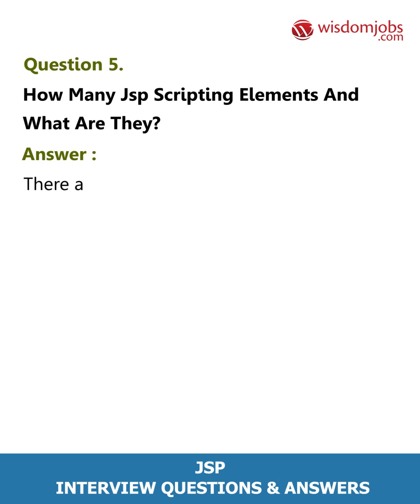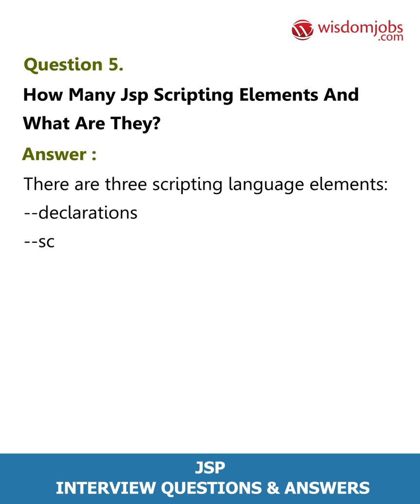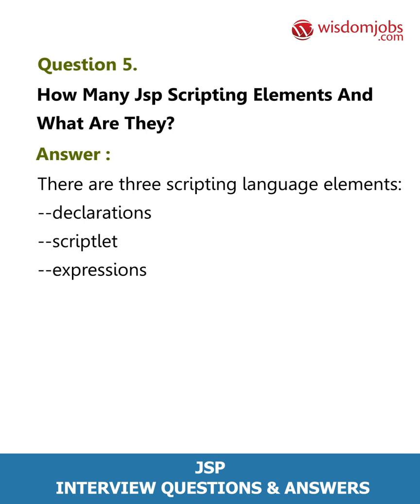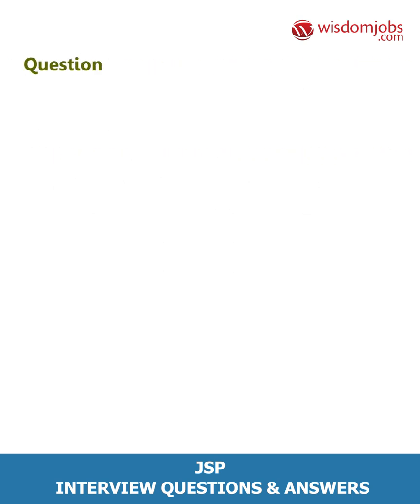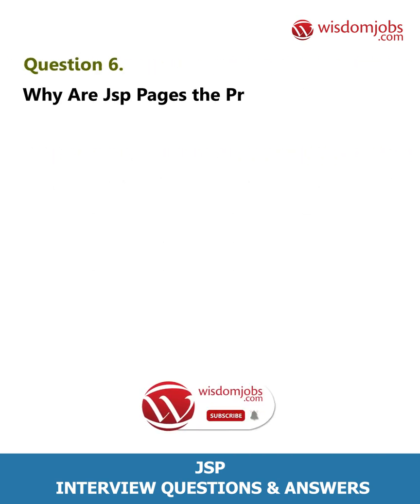Question 5: How many JSP scripting elements are there and what are they? Answer: There are three scripting language elements: declarations, scriptlets, and expressions.